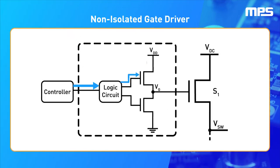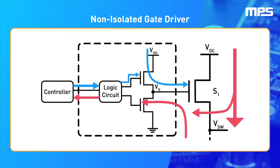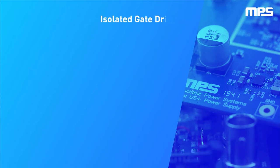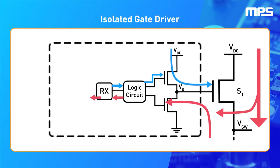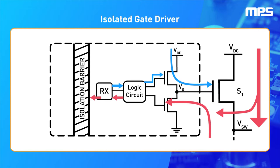Gate drivers are often used to control the commutation of power switches, especially field-effect transistors. With increased bus voltages and switching frequencies, it's important to isolate the power path from the sensitive control signals in order to protect the user and avoid malfunctions caused by cross-conduction from the MOSFET.